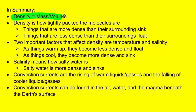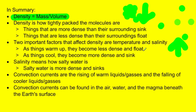In summary: density is mass divided by volume — it is how tightly packed the molecules are. Things that are more dense tend to sink, and things that are less dense tend to float. Two important factors that affect density are temperature and salinity. As things warm up, they become less dense and float; as things cool down, they become more dense and sink. Salinity means how salty water is — salty water is more dense and sinks. Convection currents are the rising of warm liquids and gases and the falling of cooler liquids and gases, and they can be found in the air, in the water, and in the magma beneath the Earth's surface.